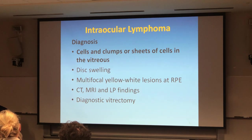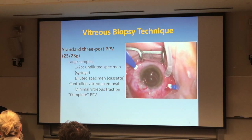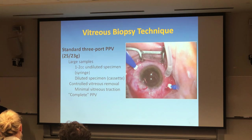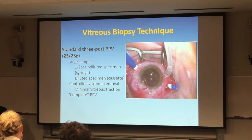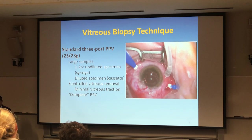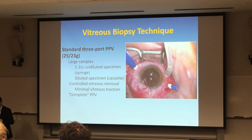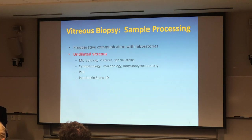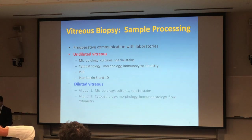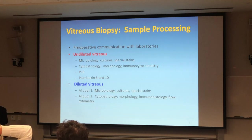That combination does work — it helps to control the disease until systemic therapy is in place. It doesn't cure, but it helps maintain control. The diagnosis is made by seeing clumps or sheets of cells. We want to do MRI and CT, and then diagnostic vitrectomy. As Janice Davis from Bascom Palmer discussed, you want to slow down the cutting speed so you capture the cells without destroying them. Go where the vitreous appears most cellular, get that material, and send it right away — you want pure vitreous aspirate.